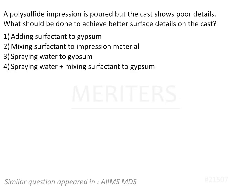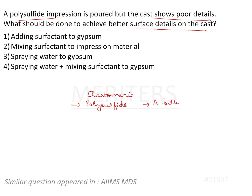A polysulphide impression is poured but the cast shows poor surface details. What should be done to achieve better surface details on the cast? We are talking about elastomeric impression materials — specifically polysulphide. There are four of them: polysulphide, A-silicon, C-silicon, and polyether.